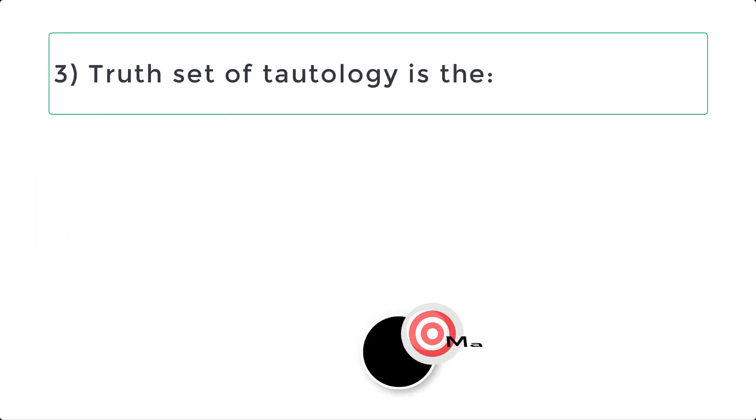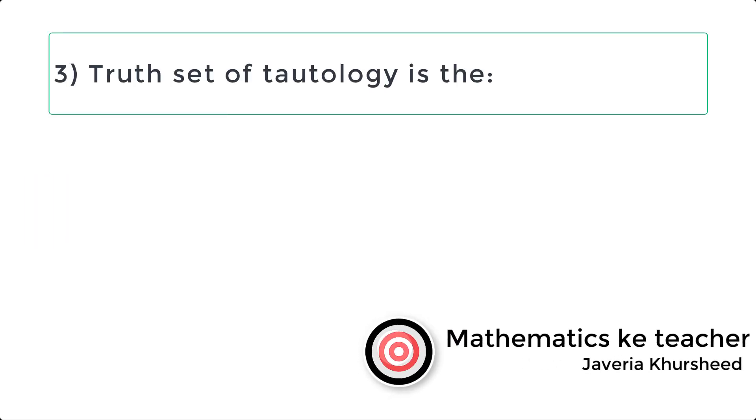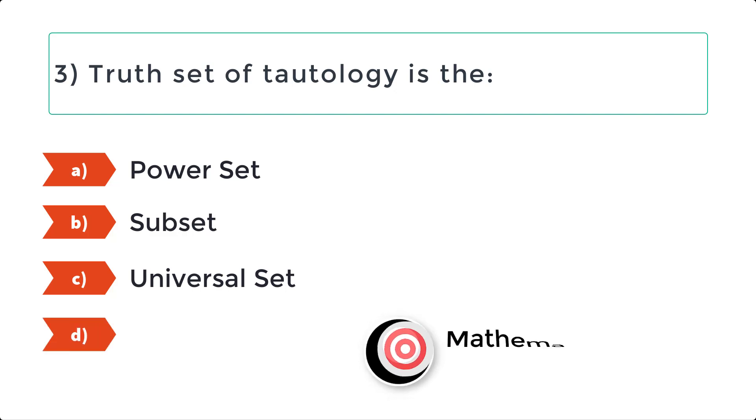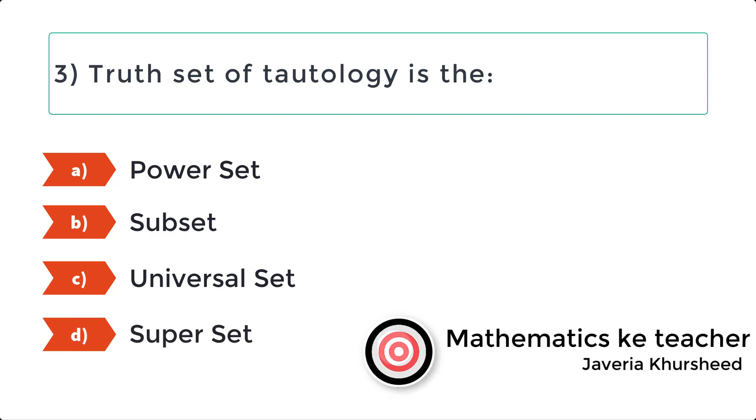3. Truth set of tautology is the A. Power set. B. Subset. C. Universal set. D. Superset.